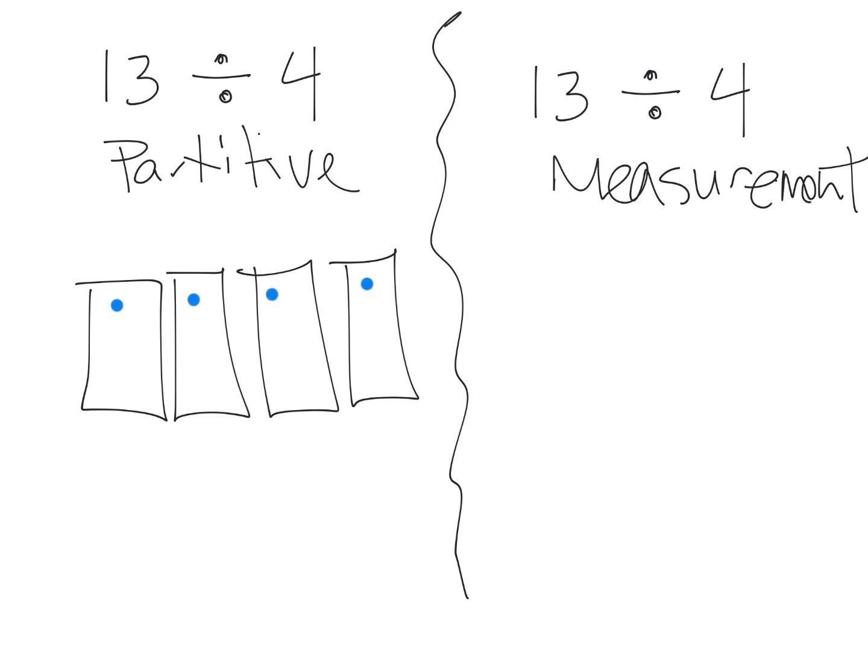1, 2, 3, 4, 5, 6, 7, 8, 9, 10, 11, 12. And then the next one over would be 13, right? So that means we have one remainder. So the answer would be, 13 divided by 4 is 3 with one remainder because there's 3 in each of the four groups.